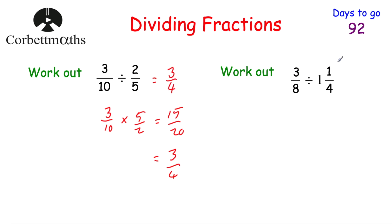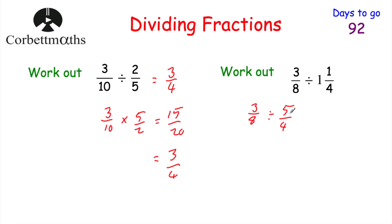Our next question — this time we've got a mixed number. What we're going to do is make it a top-heavy fraction first, and then do the division by multiplying by the reciprocal. So we've got 3 eighths divided by 1 and a quarter. I'm going to make this a top-heavy fraction first: 1 times 4 is equal to 4, plus 1 is equal to 5, so that'll be 5 quarters. So we've now got 3 eighths divided by 5 quarters.